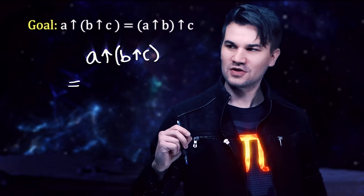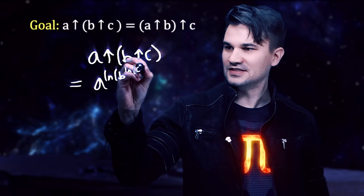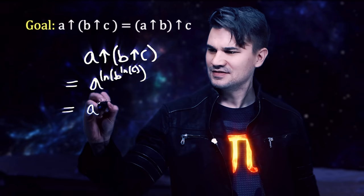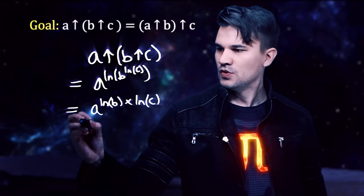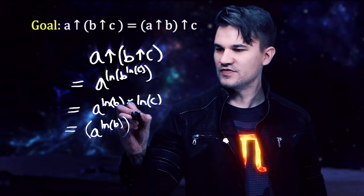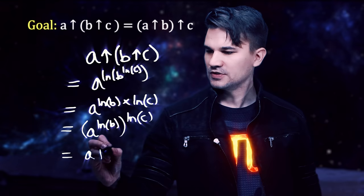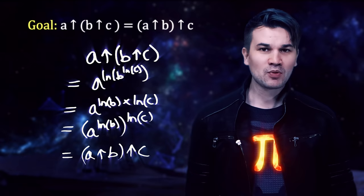A power log B power log C is A to the natural log of B to the natural log of C. And using a property of logarithms, we can write this as A to the natural log of B times the natural log of C, which is, of course, A to the natural log of B, all to the power of the natural log of C. And that is A power log B power log C. So indeed, power log is an associative operation.